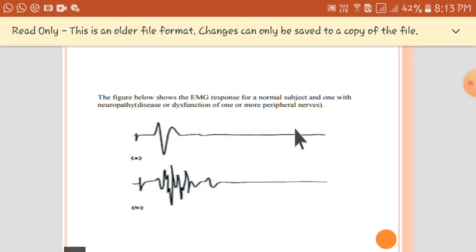Here you have the graph of an EMG response. Graph A shows the response for a normal person and graph B, it is the EMG response with some diseases or some dysfunction of one or more peripheral nerves.